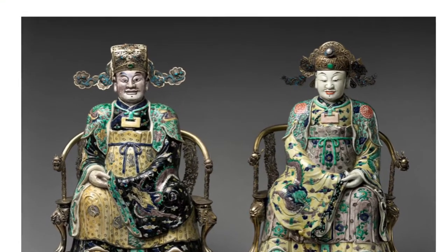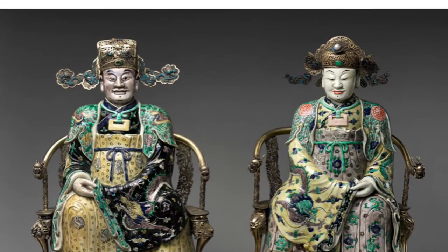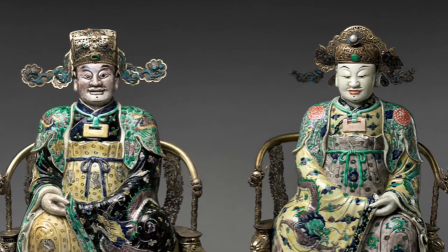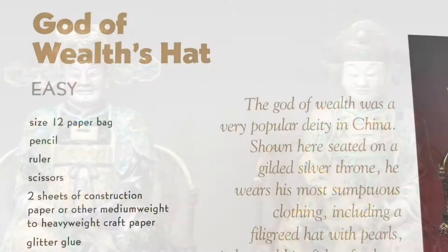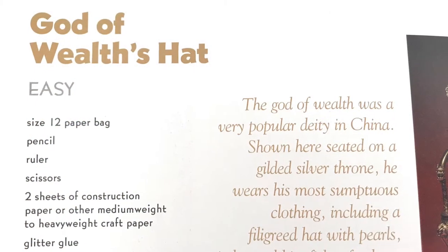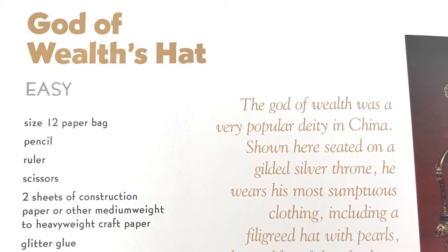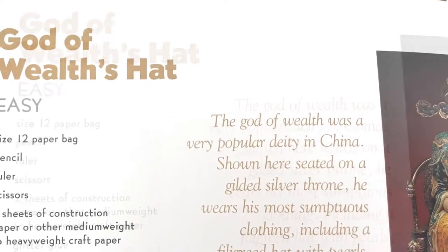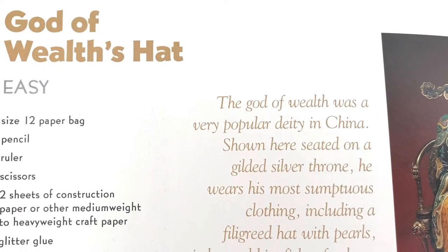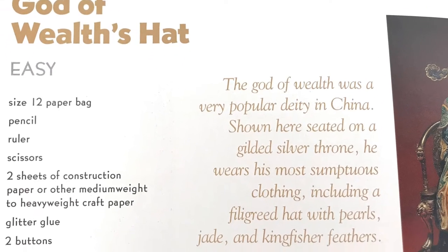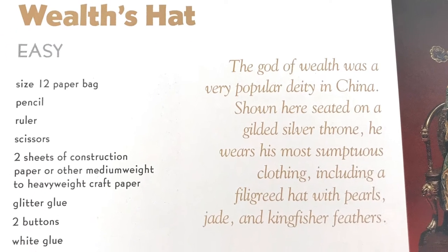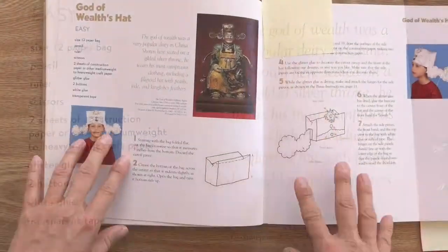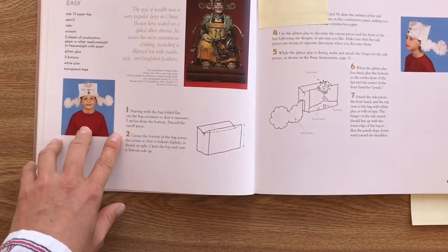Here he's seated on a gilded silver throne. He wears his most sumptuous clothing including a filigreed hat with pearls, jade, and kingfisher feathers.